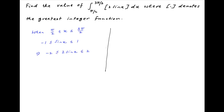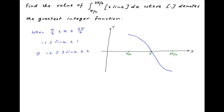Now we plot the function 2 sin x between the limits of integration on the Cartesian plane. The value of the function is equal to 2 when x is equal to π/2, the value of the function is equal to minus 2 when x is equal to 3π/2, and in between at x equal to π, the value of the function is equal to 0.